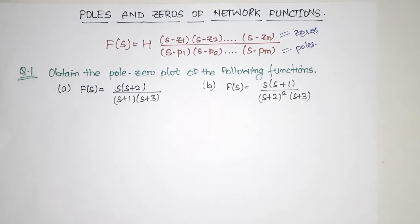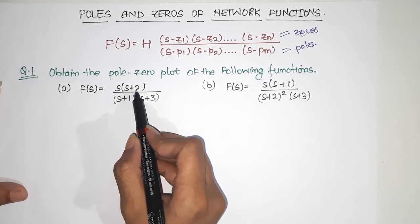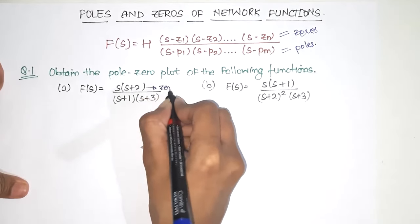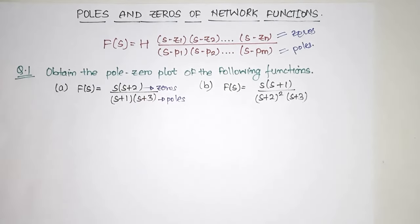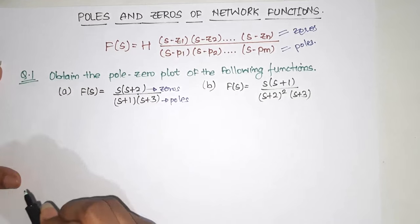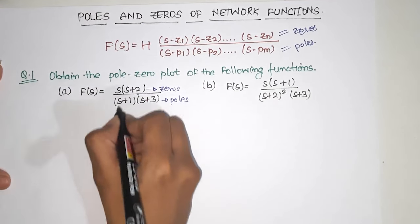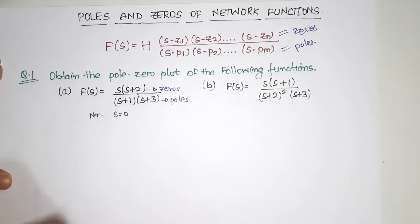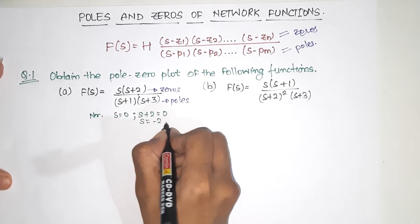First question: obtain the pole-zero plot of the following function. f(s) = s(s+2) / [(s+1)(s+3)]. As we know, the numerator gives zeros and the denominator gives poles. Equating each numerator term to zero: s = 0 and s+2 = 0, so s = -2. These are the zeros.